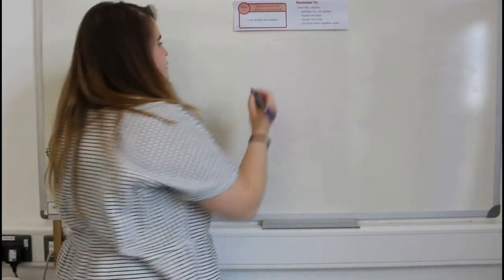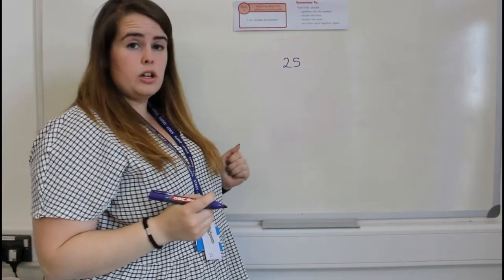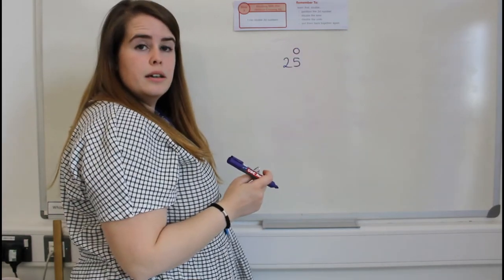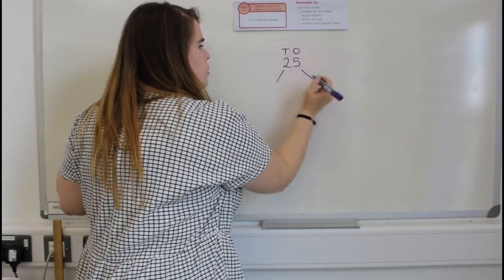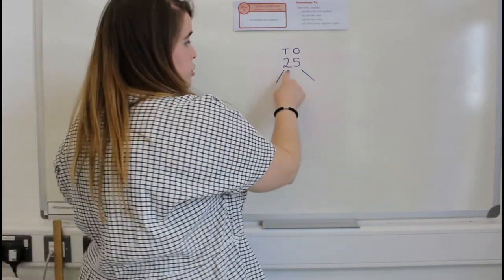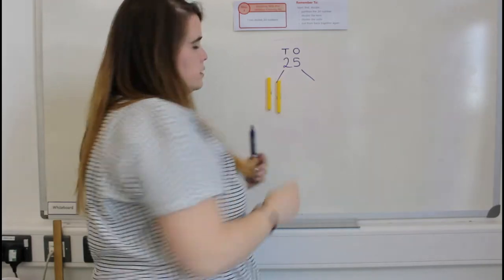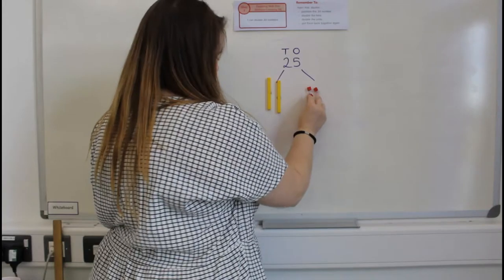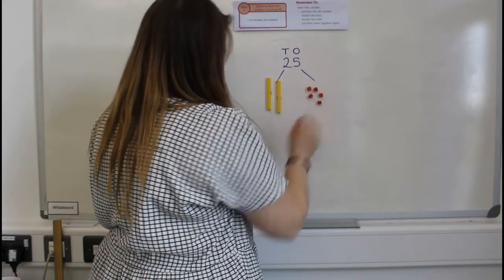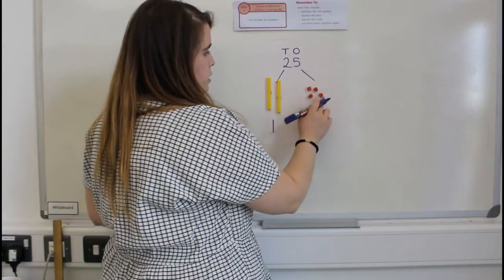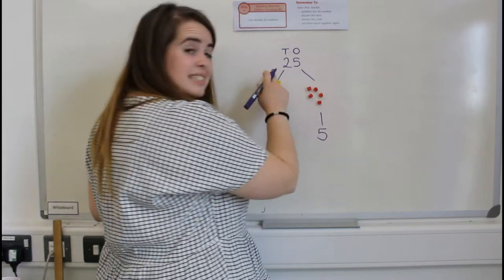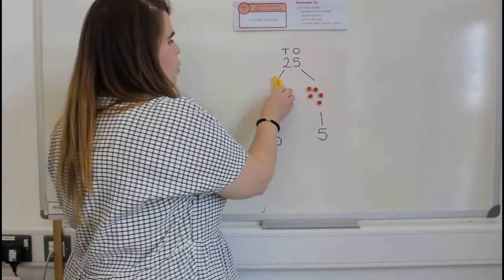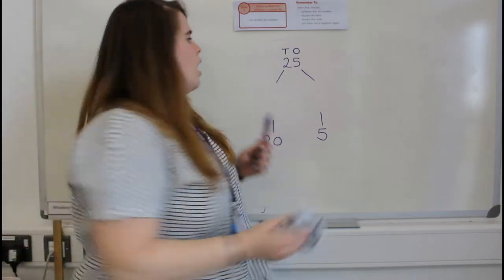We're going to do the number 25 now. Can you remember which one is the ones column — is it the two or the five? It's the five in the ones column. So what's the two in? It's in the tens column. Now let's partition: we have got two tens — one ten, two tens — and we have five ones: one, two, three, four, five. So the value is ten, twenty and five, which makes twenty-five.